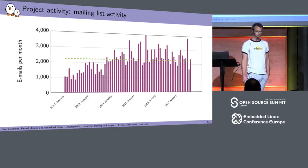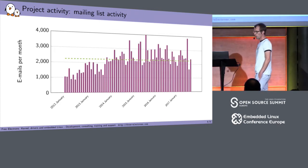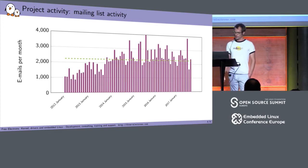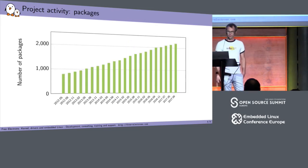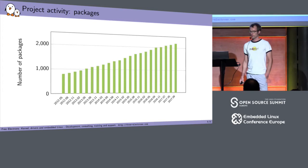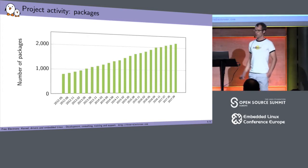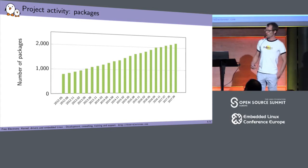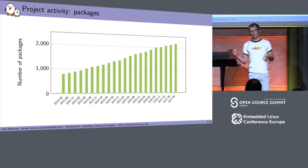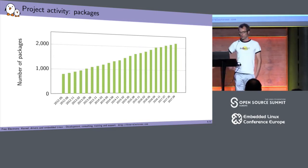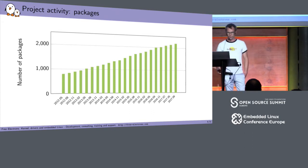We have pretty serious mailing list activity — over 2,000 emails per month on the mailing list. So if you subscribe, you get a nice flood of emails in your inbox every day. Looking at the number of packages over the last five years: we started with less than a thousand packages five years ago and now have more than 2,000. We encourage people to contribute their packages upstream rather than the separate-layers model, which is why this package number continues to grow.